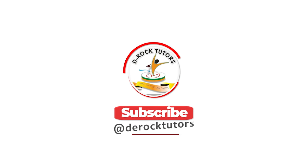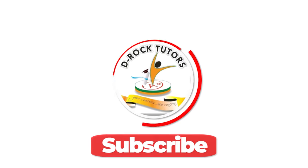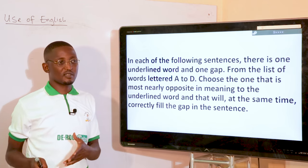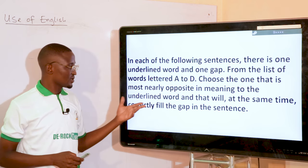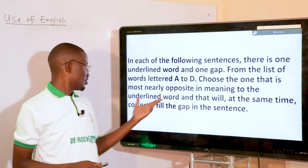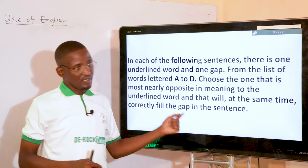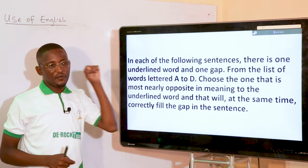Kindly subscribe to our channels and remember to hit the notification bell for more information. In each of the following sentences there is one underlined word and a gap. From the words lettered A to D, choose the one that is most nearly opposite in meaning to the underlined word and will at the same time correctly fill in the gap. There are two things to be done.